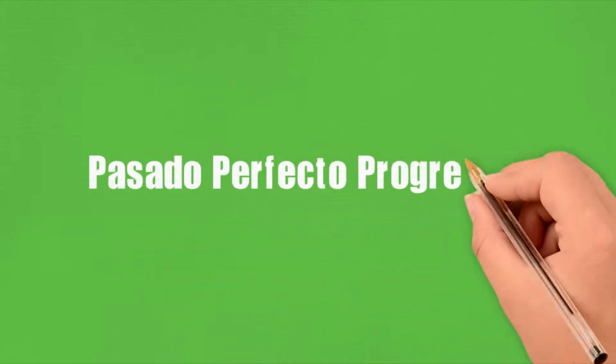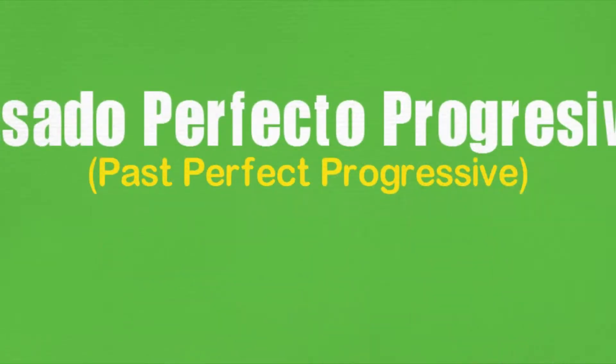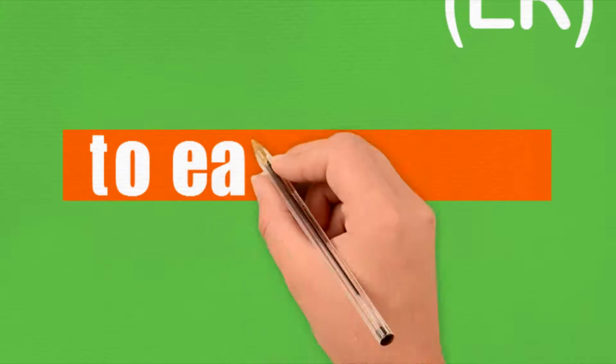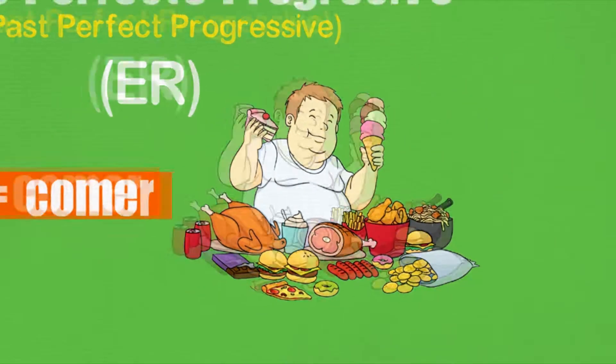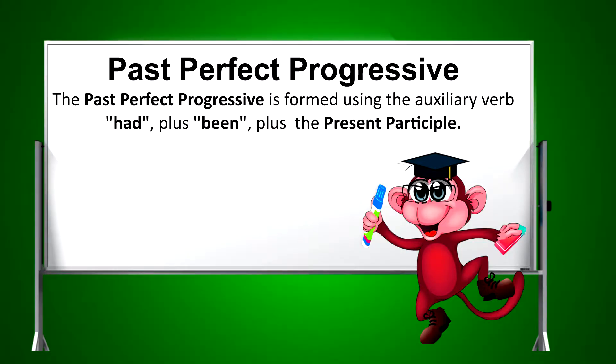Pasado perfecto progresivo. Comer. The past perfect progressive is formed using the auxiliary verb had, plus been, plus the present participle.